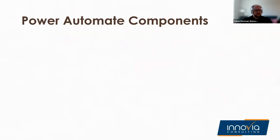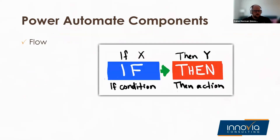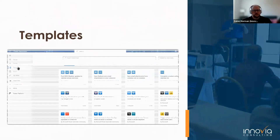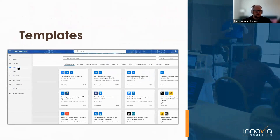Power Automate's base component is the flow. A flow at its core is an if-then statement made up of two parts: triggers, which determine what starts the flow - that is, the 'if' - and actions, which determine what the flow does - the 'then.' You can create Power Automate flows from scratch, but Microsoft also offers hundreds of templates in Power Automate Studio. You can search templates by function or by the program whose connector you're using.